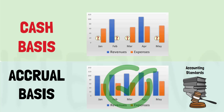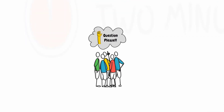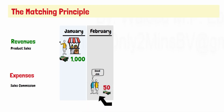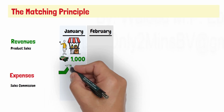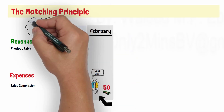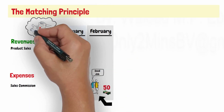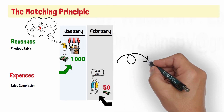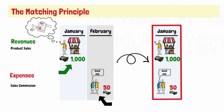Now, let us answer the question that was raised in the previous lecture. The sales commission was paid during February, but the salesman sold the goods during January and earned his commission when the sale was done. So, the sales commission expense should be recognized in January, regardless of when it was paid to the salesman.